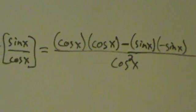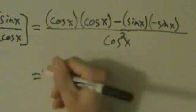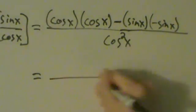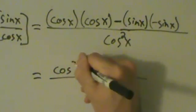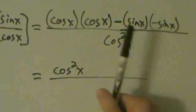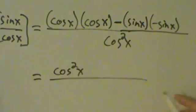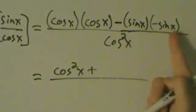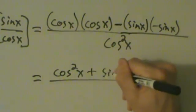Now let's simplify this. This equals cos(x) times cos(x), which is cos²(x), minus sin(x) times negative sin(x). These two minuses combine to become a plus, and we have sin(x) times sin(x), so plus sin²(x).